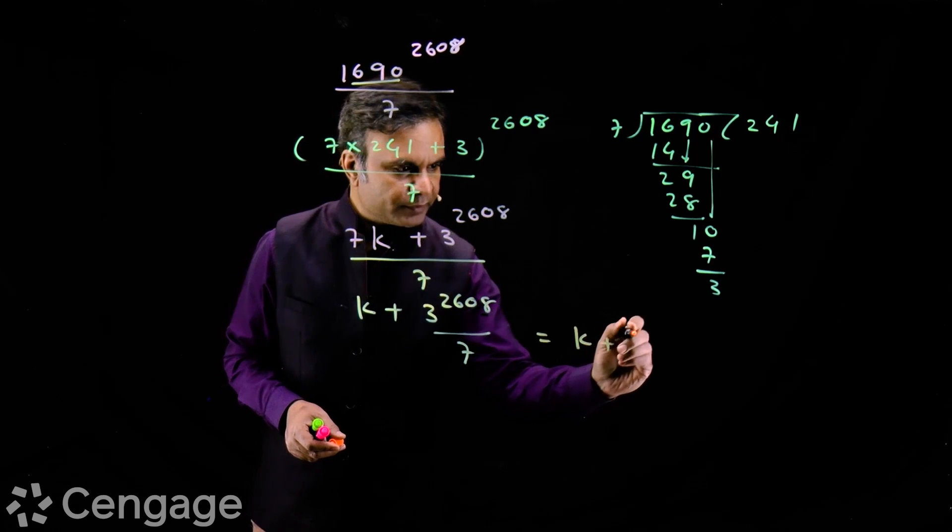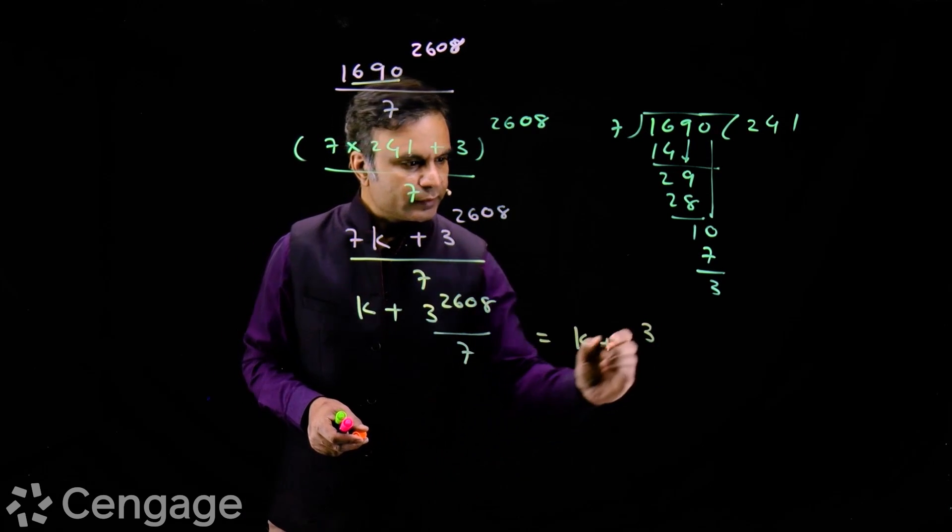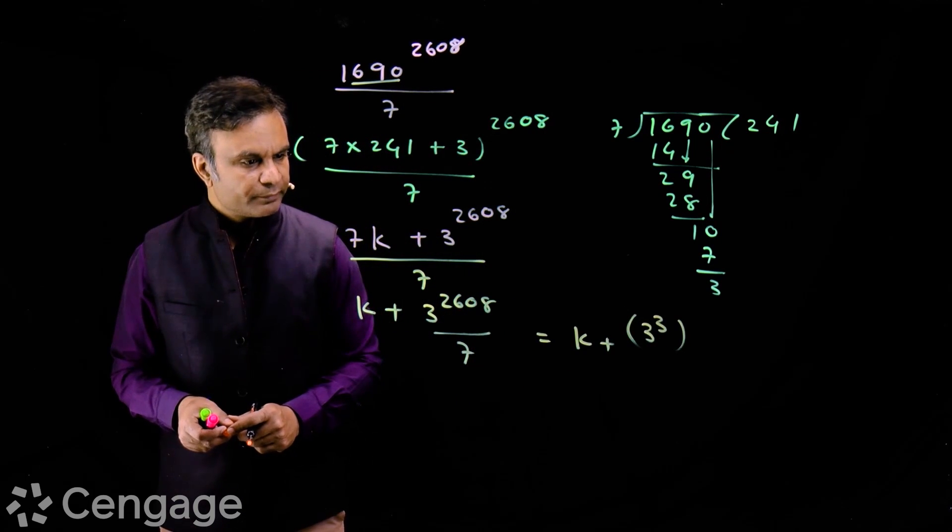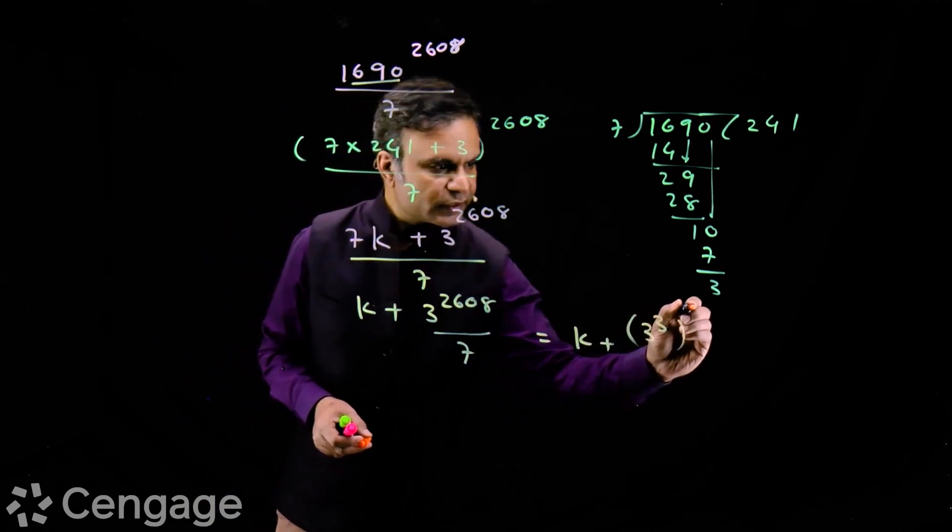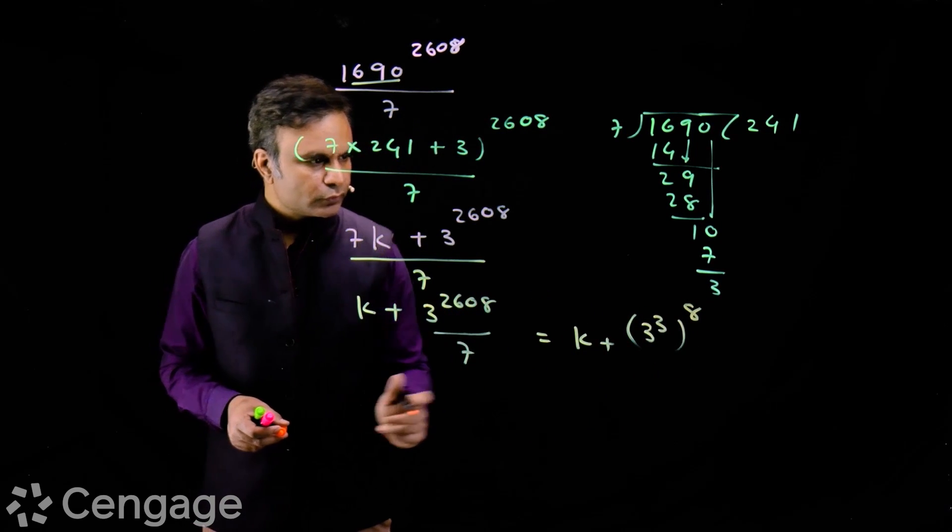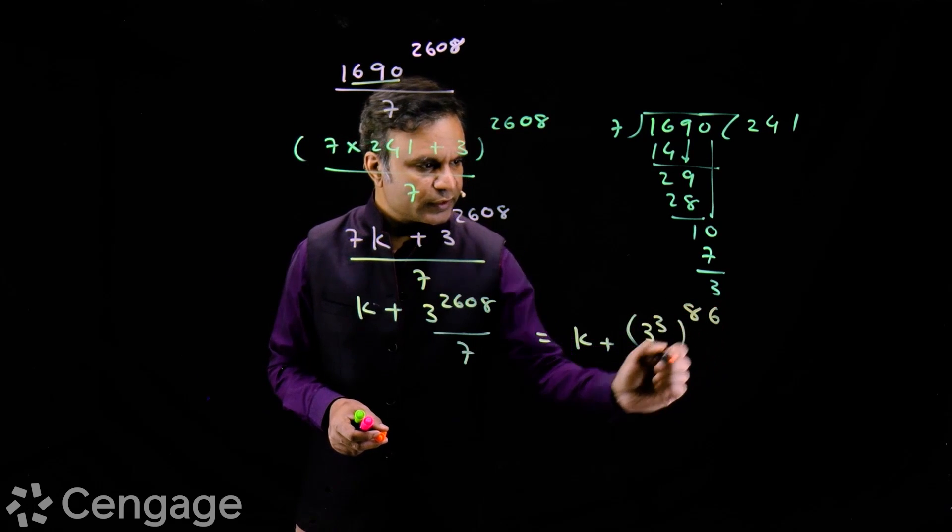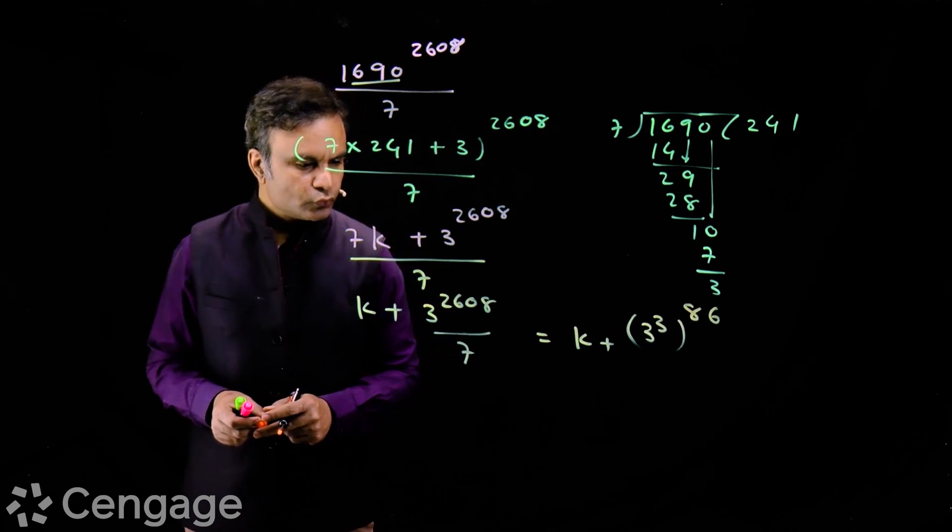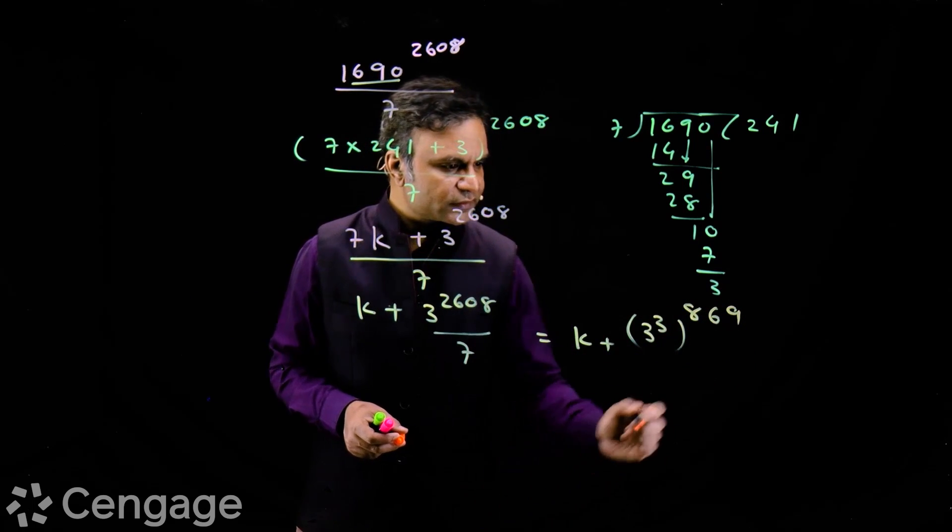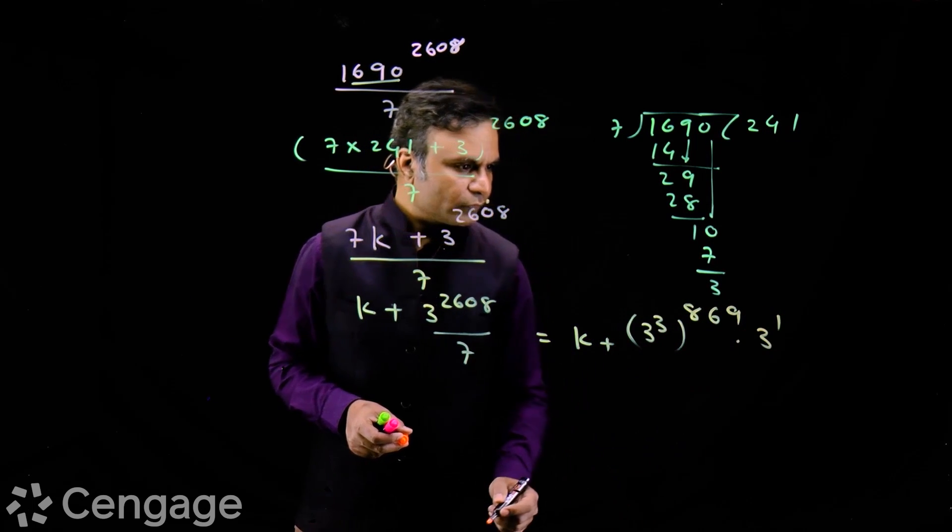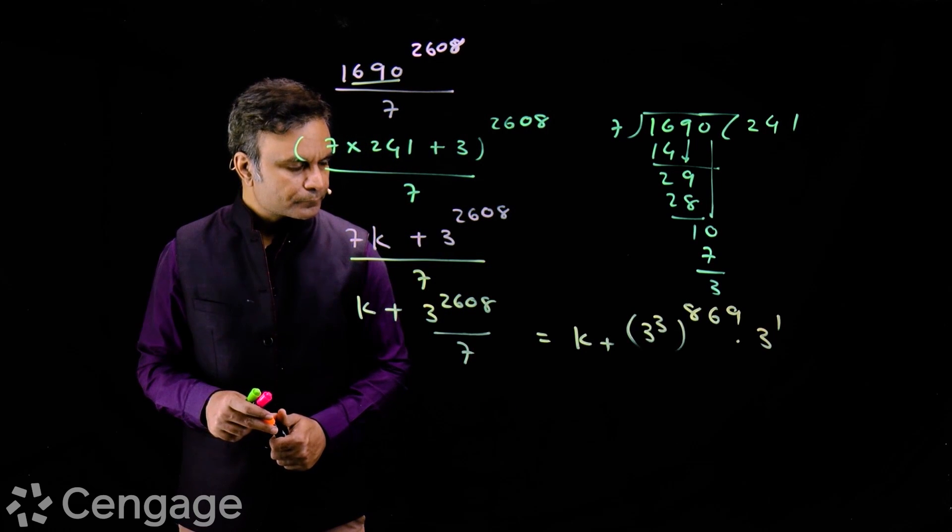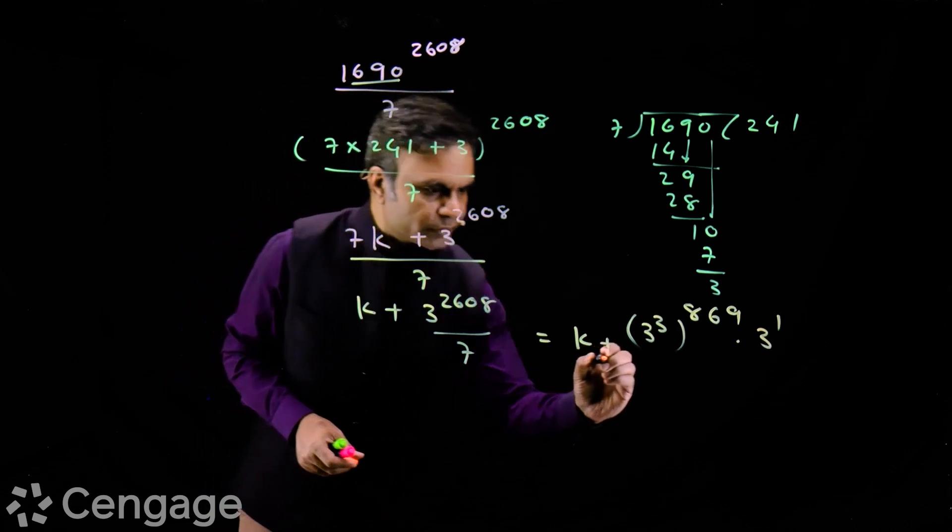So this is equal to k plus 3 power 3 power, we divide 2608 by 3, we have 3 goes into 26 eight times with remainder 2, then we have 08, 3 goes into 8 twice with remainder 2, 3 goes into 28 nine times with remainder 1. So we have here 3 power 869 multiplied by 3, which is 3 power 1. Is this okay? That is good.